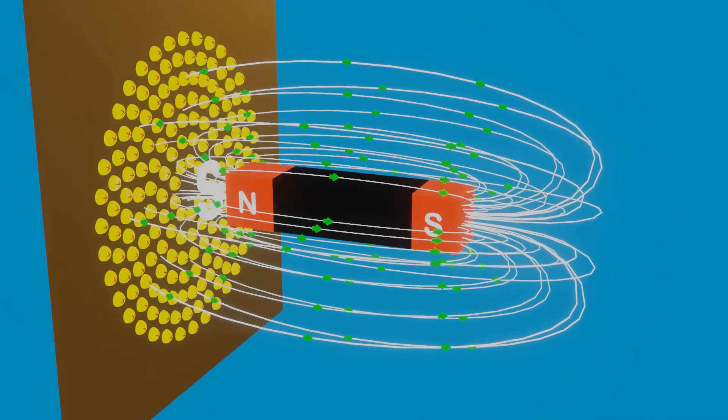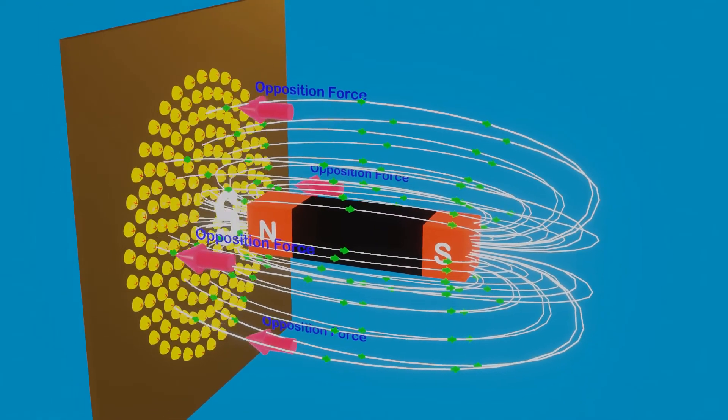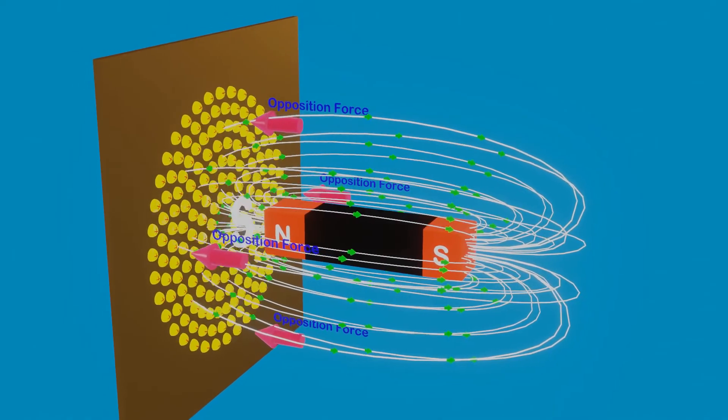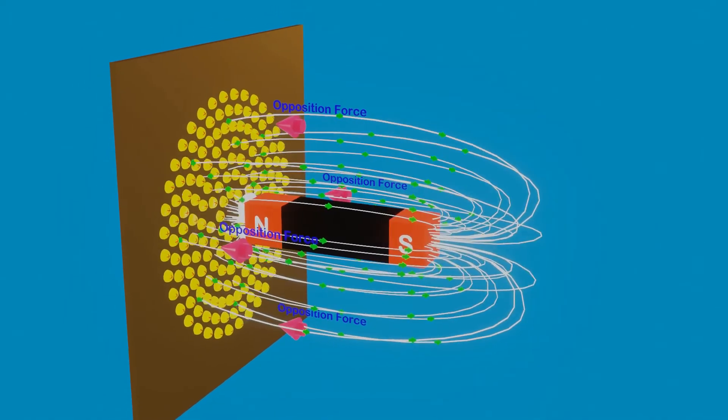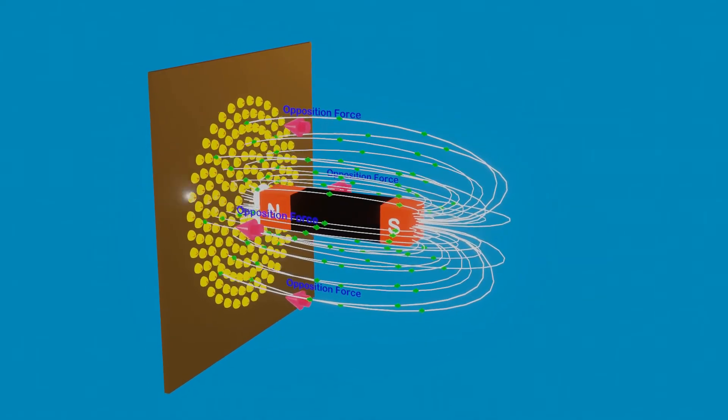Hence, it starts acting like a south pole to attract and oppose the magnet moving away from the conducting plate. Please note that, according to Lenz's law, opposing force will be induced only if there is a relative motion between magnet and conducting plate.